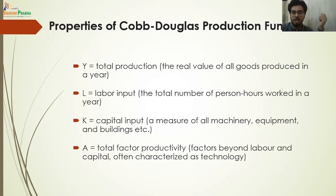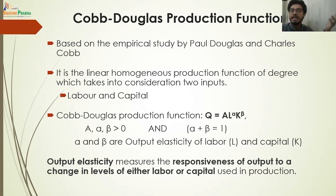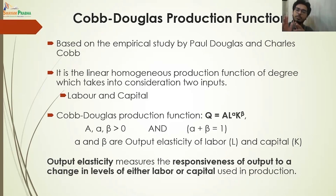We can estimate the marginal productivity of labor and marginal productivity of capital using differentiation. Delta Q by delta L equals alpha times A times L to the power alpha minus 1. So alpha comes in front and it becomes alpha times A times L to the power alpha minus 1. The same happens with beta and K: delta Q by delta K equals beta times A times K to the power beta minus 1. With this we can estimate the marginal productivity of labor and capital — the change in output with respect to one unit change in labor and capital.